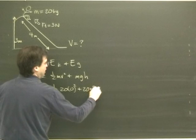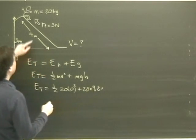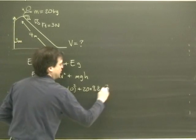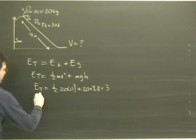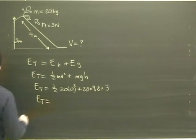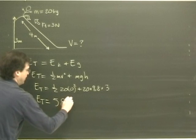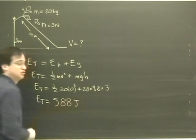Plus 20 times 9.8 times my height, which is 3 meters. So the total energy of this system at the top is going to be 588 joules.